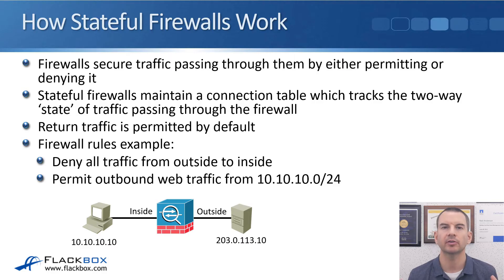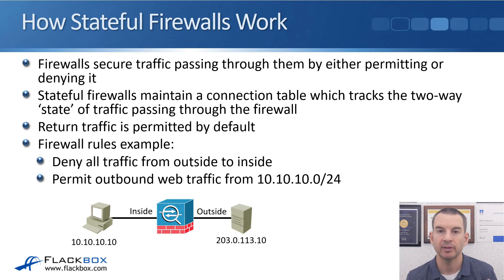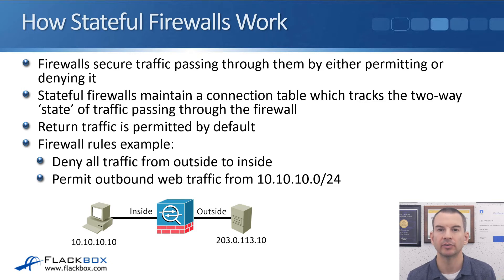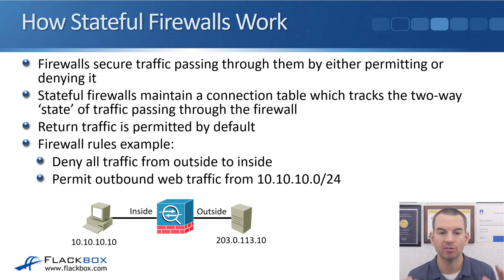In this lecture you'll learn how firewalls work, and I'll also compare them with packet filters — that's your access control lists. Firewalls secure traffic passing through them by either permitting or denying it according to their rules. Stateful firewalls maintain a connection table which tracks the two-way state of traffic passing through the firewall, and return traffic is permitted by default.